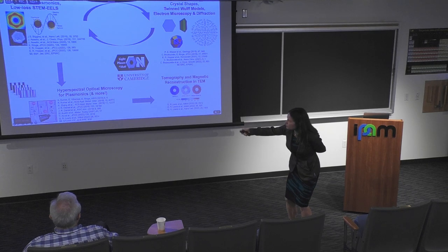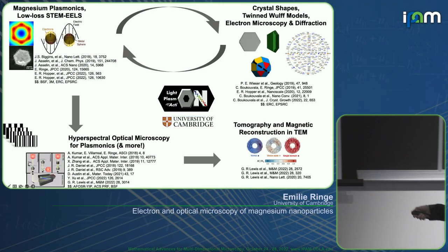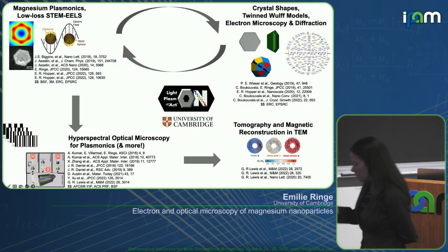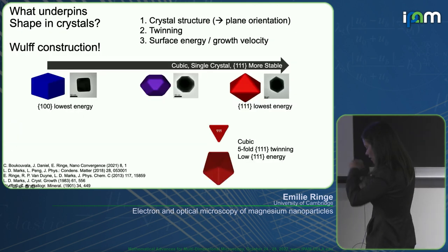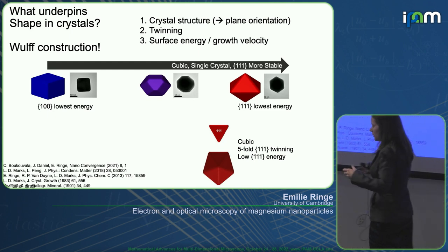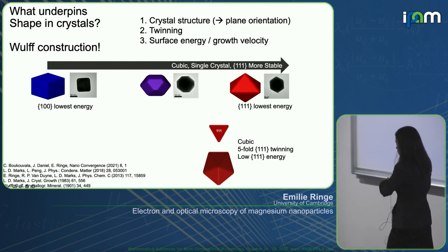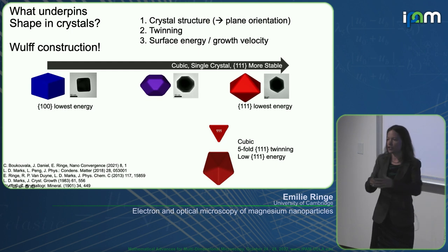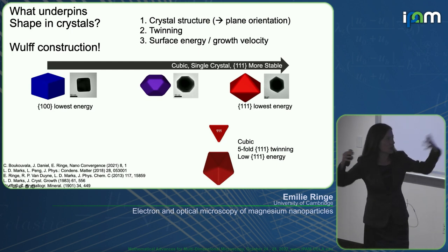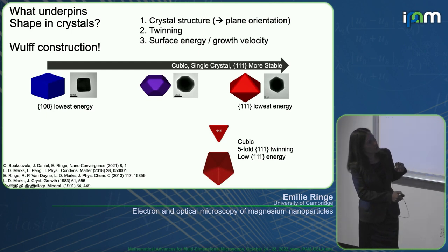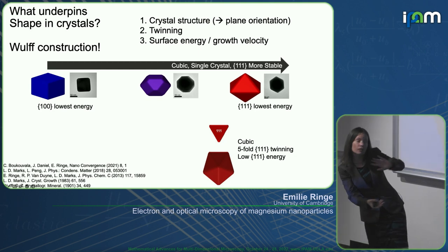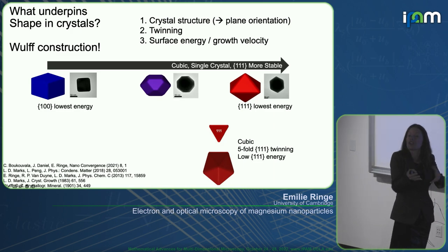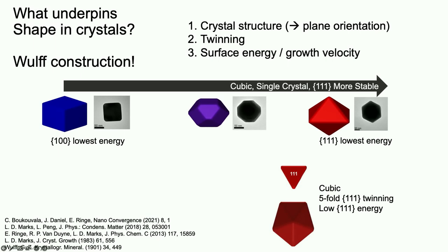So we're making magnesium and we're interested in it because we think it's a great platform for a number of plasmonic applications. As we were doing that, we've been asking ourselves what shapes are made by magnesium. If you scratch your head back to the understanding of shape all the way to 1901, to Wulff, you can find that the shape of a crystal — whether nanoscale or macroscopic — is basically dictated by its crystal structure, the twinning, and the surface energy or growth velocity.